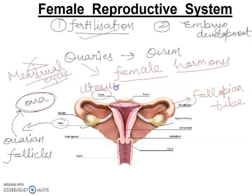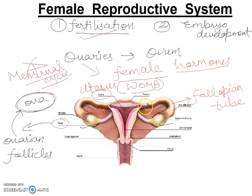The uterus — commonly called the womb — is a thick-walled muscular organ into which the two fallopian tubes open. The embryo gets implanted in the uterus and development continues up to 9 months of pregnancy. The lower tip of the uterus is called the cervix.